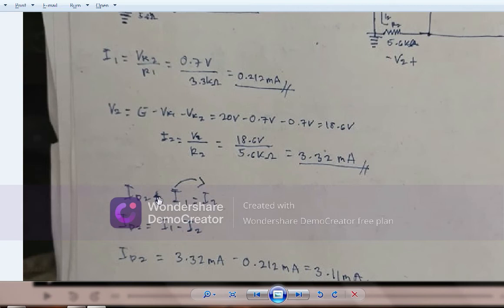In order to find id2, we need to transpose i1 to the right side. Then id2 equals i2 minus i1.